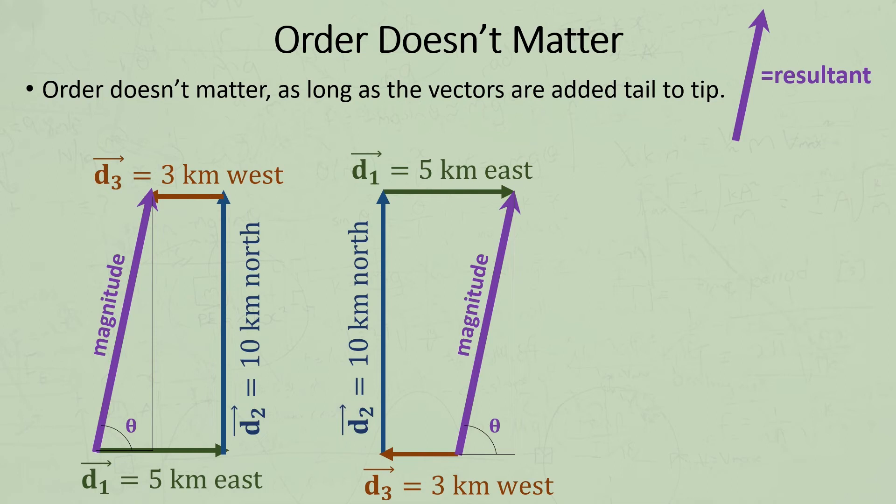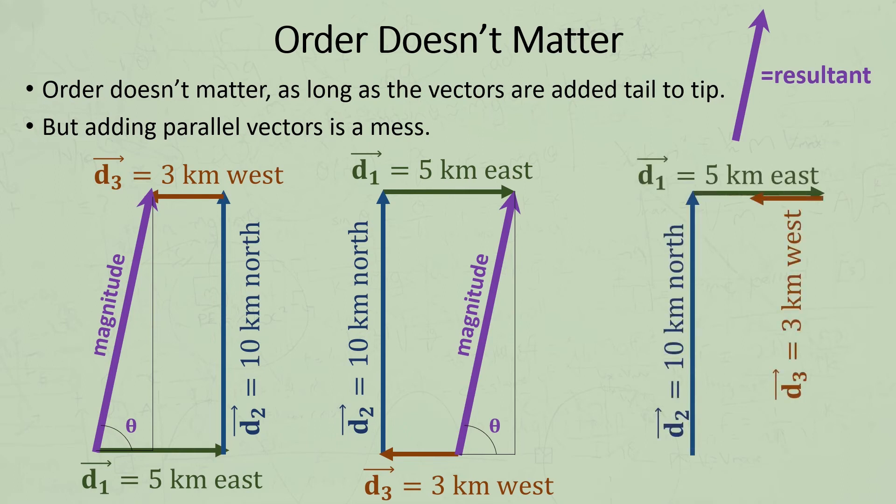However, I recommend not trying to add parallel vectors one after the other, because it can become a mess. So if we started with the first vector, we'd end up with this. We can still draw the resultant from start to finish and get the correct answer, but I think it's less clear than the first two diagrams.